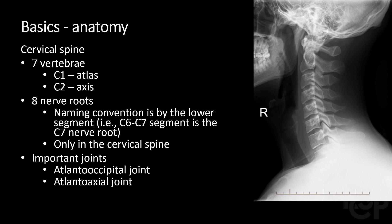The cervical spine consists of seven vertebrae, with C1 and C2 receiving special names — C1 being the atlas and C2 being the axis. The cervical spine is unique in that it contains eight nerve roots for seven vertebrae, and they are named differently than they are in the rest of the spine.